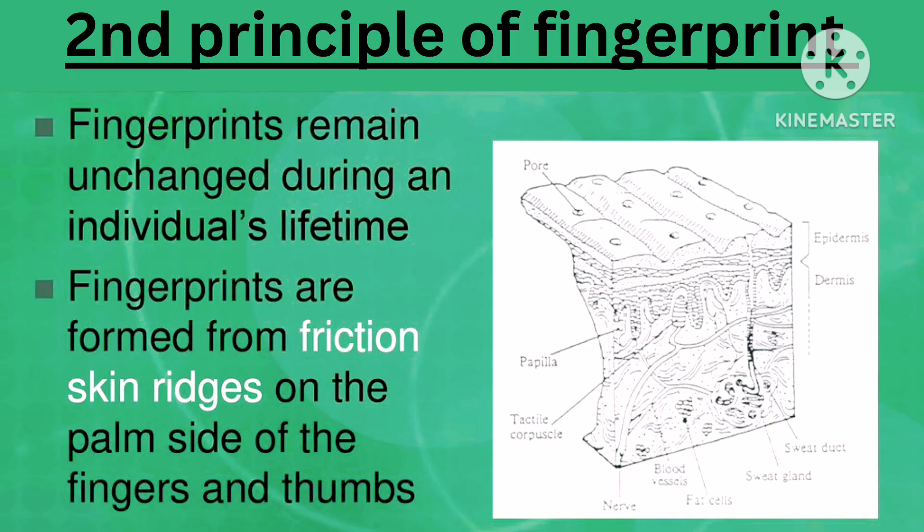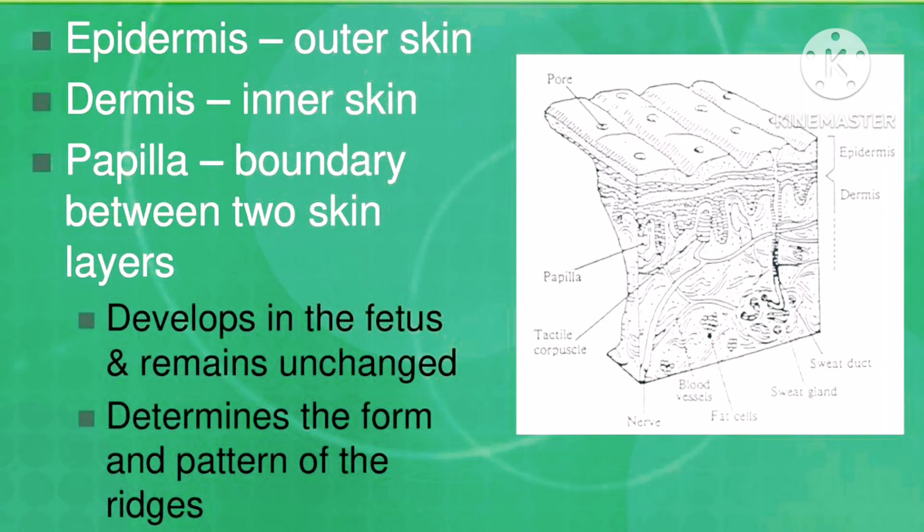The second principle of fingerprint is that fingerprints remain unchanged during an individual's lifetime. Fingerprints are formed from friction skin ridges on the palm side of the finger and thumb. The epidermis is the outer skin.